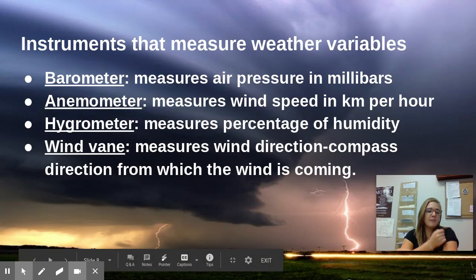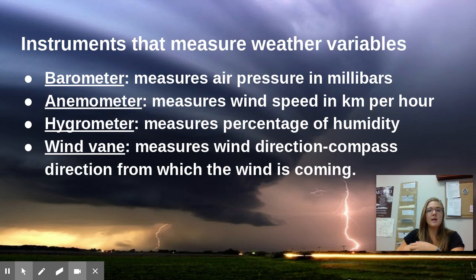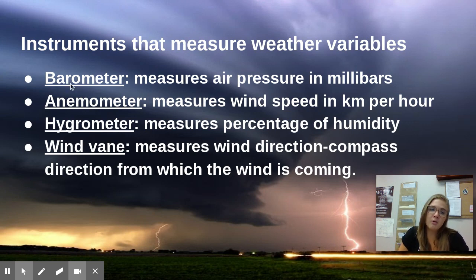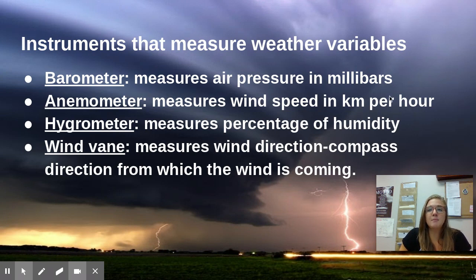So those are a few of the weather variables that we look for. Next, we're going to talk about the instruments we use to measure these variables. The first one is the barometer — pronounced barometer, not barometer — and this measures air pressure in millibars, which is just the unit for air pressure. Next, we have the anemometer.